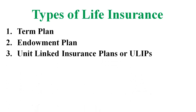Number three: Unit Linked Insurance Plans, or ULIPs. Similar to an endowment plan, a part of your insurance premiums go toward future fund investments while the remaining goes toward the death benefit.